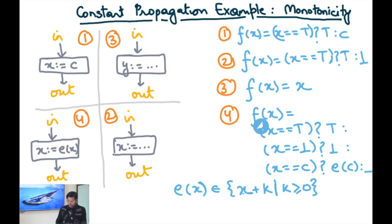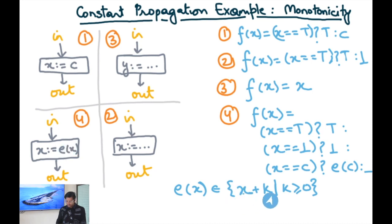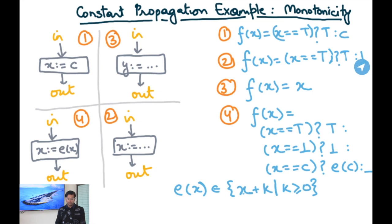The fourth transfer function specifies: if the input is top then the output is top; if the input is bottom then the output is bottom; if the input is a constant C and the expression is of the form x + k for some k ≥ 0, then the output is E(C). If the expression is not of that form, we fall back to the second transfer function, giving bottom for non-top input. This was a quick review of the transfer functions for the constant propagation example for a single variable x; now we want to check whether all these transfer functions satisfy the monotonicity property.